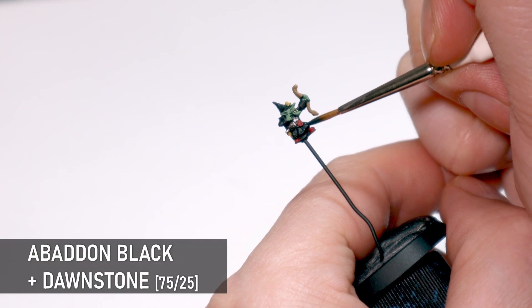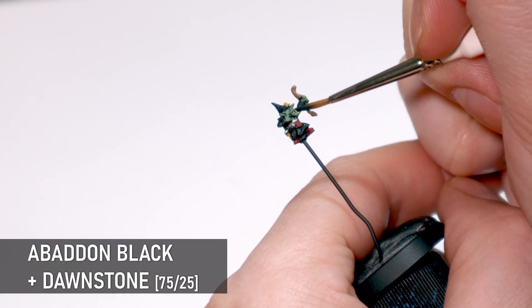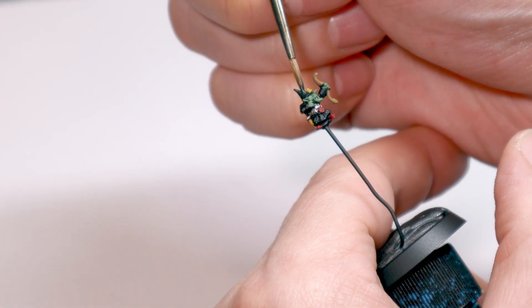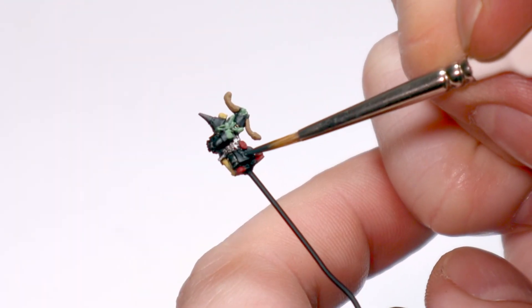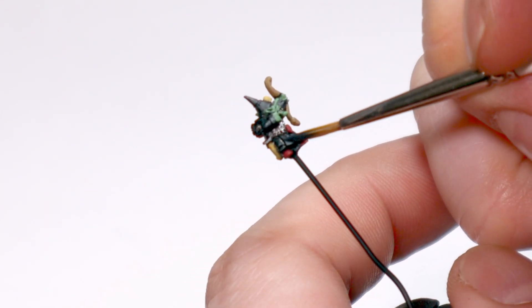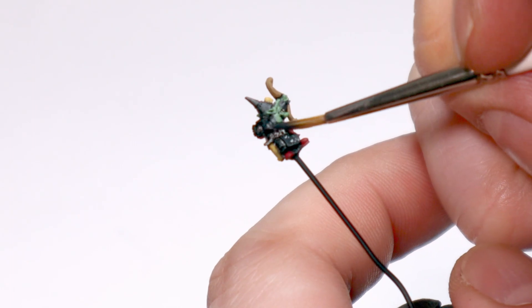Anything left on the model is going to be black, so I'm coming along here with a very dark grey that I've mixed with Abaddon Black and Dawnstone. And this is generally how I paint my blacks. I use a dark grey, then I give it a wash, and then I add some pure black into the shadows.